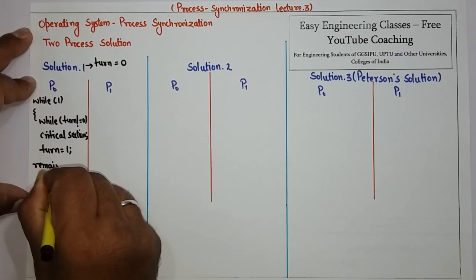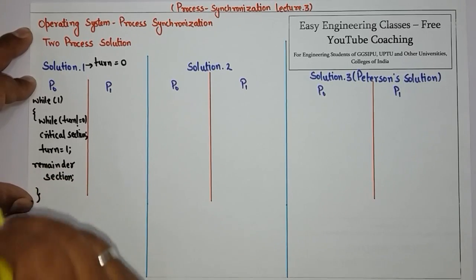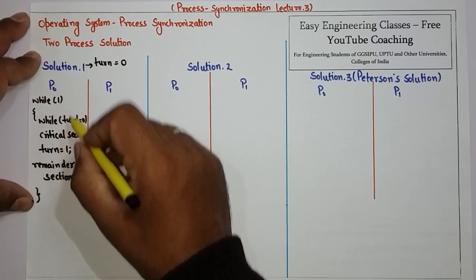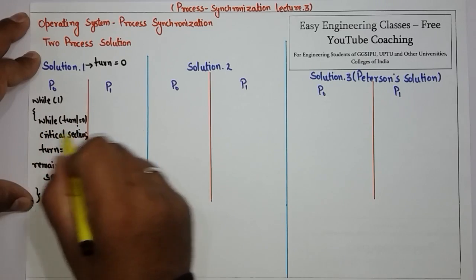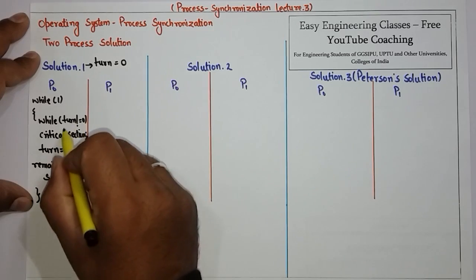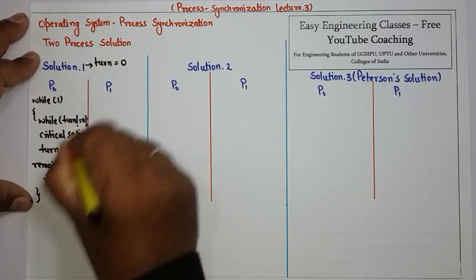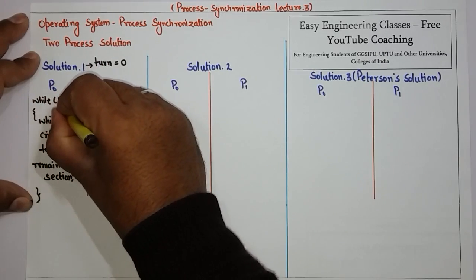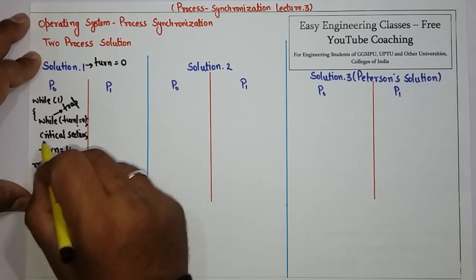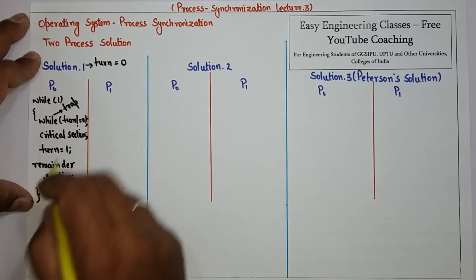There is also a remainder section. Initially when turn equals zero, process P0 enters the critical section because the condition 'while turn != 0' is false, so the trap does not occur — the semicolon represents the do-nothing trap. Once P0 completes its critical section work, turn is set to one.